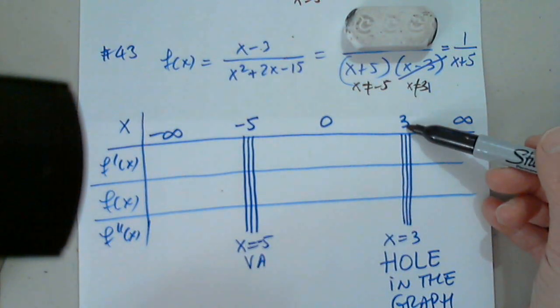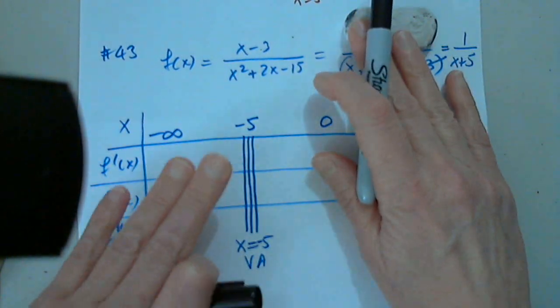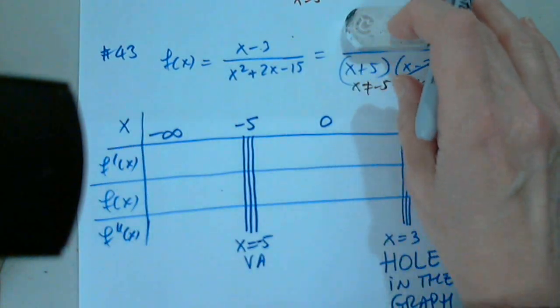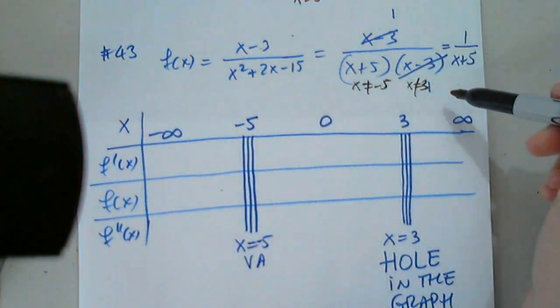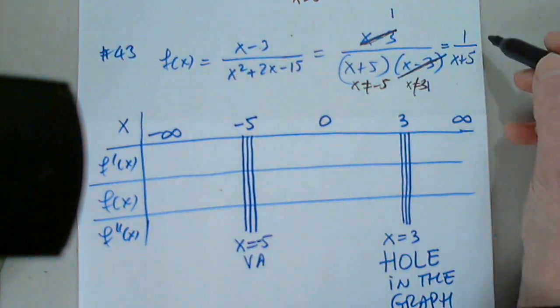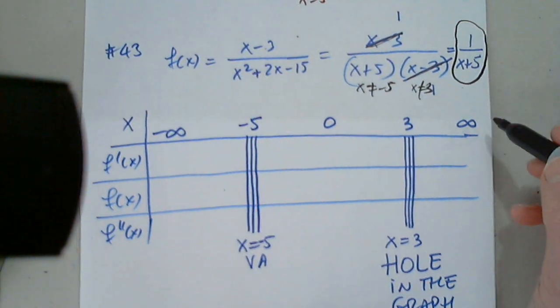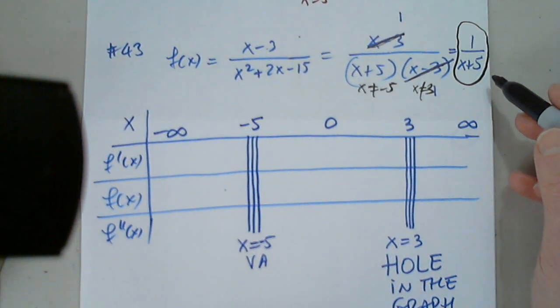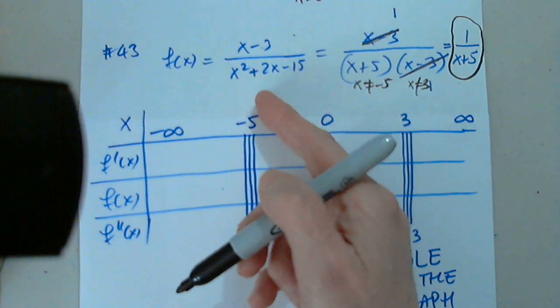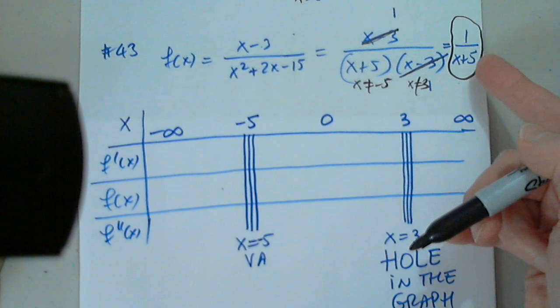But the denominator is not free to be anything. If it is negative 5, then this fraction is undefined. If it is 3, then there is a different problem. It's 0 over 0. So we identified these two. We said negative 5 is out, 3 is out. Only then we have to study the domain on the raw function. Only then we said, oh, look at that. I can simplify x minus 3 with x minus 3.